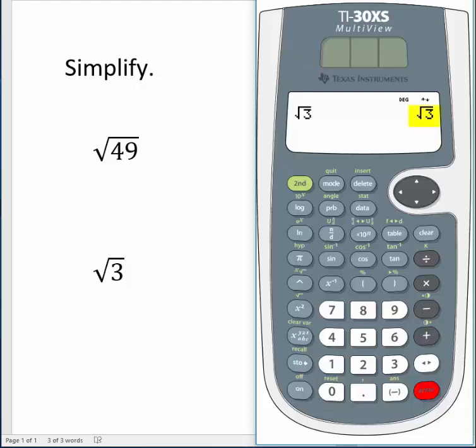Notice that the calculator returns the square root of 3 as the answer. Can you think of a number that when you multiply by itself, you get 3?